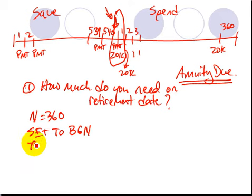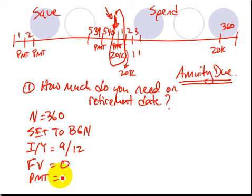The interest rate, I slash Y, that was 9% a year. And so it's 9 over 12 for every month. The future value, notice the future value is zero because we're not going to leave anything to our children. And the payment is, let's go ahead and make it $20,000.